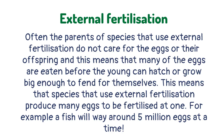Often the parents of species that use external fertilization do not care for the eggs or the offspring, and this means that many of the eggs are eaten before the young can hatch or grow big enough to fend for themselves. This means that species that use external fertilization produce many eggs to be fertilized at once. For example, a fish will lay around five million eggs at a time.